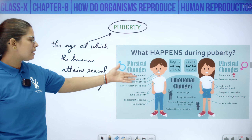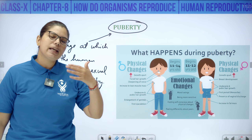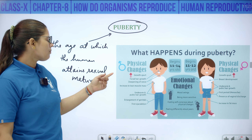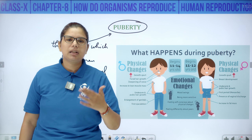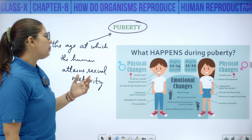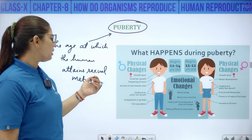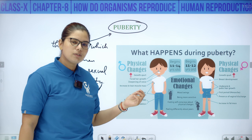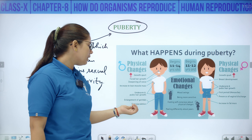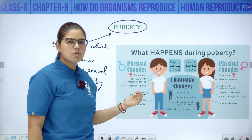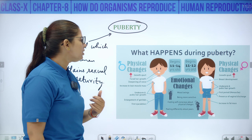The physical changes in boys include: facial hair growth — beards and mustache appear; deepening of voice; increase in lean muscle mass; underarm and pubic hair growth; enlargement of genitals; and the first ejaculation also occurs during this period of puberty.